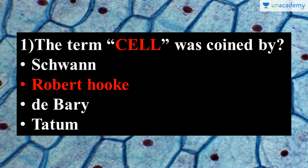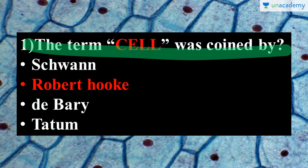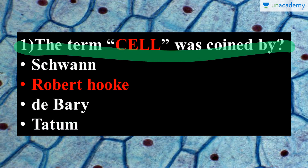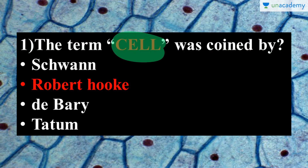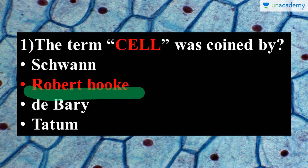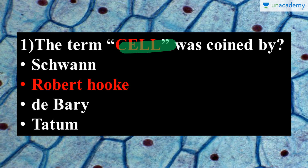If we talk about the criteria or pattern of questions on cell which are asked in the NEET exam, a single question is given with four options, out of which you have to select one correct answer. For example: the term 'cell' was coined by whom? To answer this, you need to read about the cell and cell theory from the introductory part of the NCERT book. The answer is Robert Hooke, because he was the first person who observed the cell accidentally and named them as cells.